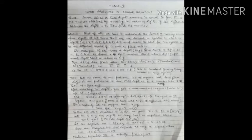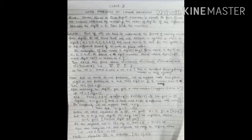Now let us come to our original problem. Let us suppose that the tens place digit is x and the ones digit is y, so our original number n can be written as 10x + y, just as we wrote abcd earlier. After reversing the digits, we get a new number — let us call it n-dash — which is equal to 10y + x, because we have reversed the digits.